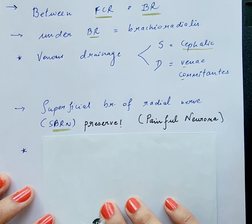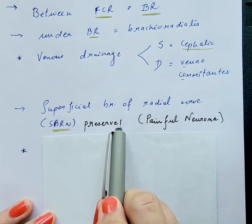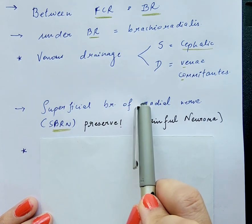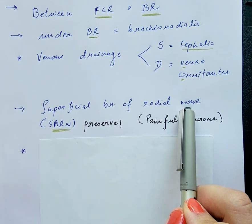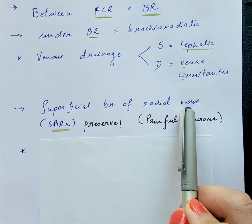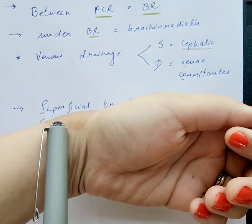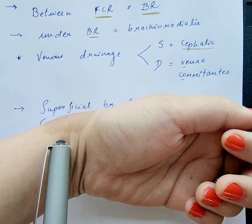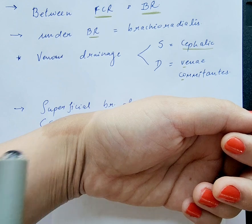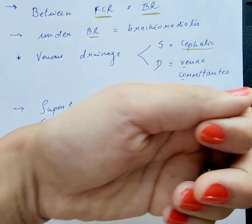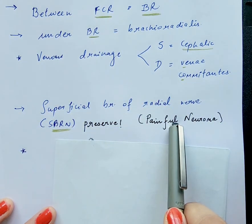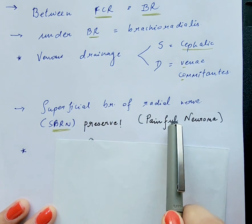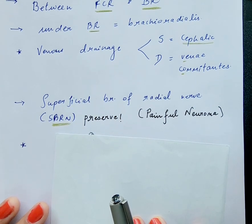The important structure which must be preserved at all costs during harvest of the radial artery forearm flap is the SBRN — the superficial branch of the radial nerve. All along the course of this flap, the cephalic vein is radial to the radial artery, making it the radial-most structure, with the superficial branch of the radial nerve lying in between. If injured, it leads to a very painful neuroma at the distal part of the harvest, closer to the wrist crease.